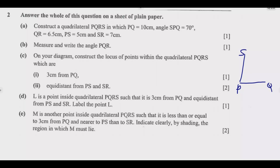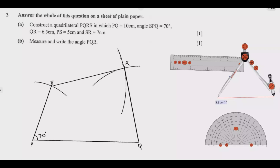So from the draft, PS is 5 centimeters, PQ is 10 centimeters — the longest side — QR is 6.5 centimeters, and SR is 7 centimeters. This gives you an idea of how the shape will look before you start drawing. For the instruments, you need a ruler, a compass, and a protractor — these are the tools required to answer this question. Once you have a sketch, it is easier to proceed.